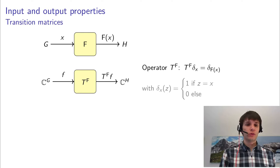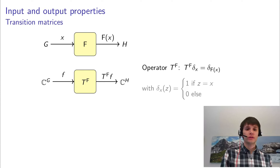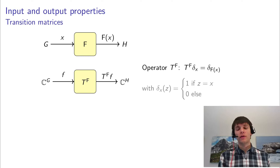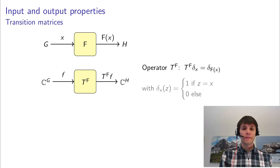There is a simple relation between F and the output state, which is just a multiplication with a matrix, or in other words a linear operator. What does that operator do? It maps the delta function delta x — which is zero everywhere except when the input is x — to the function delta f(x). And this completely defines that operator.